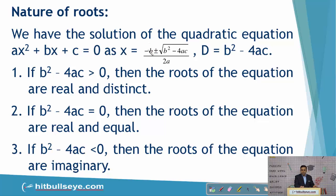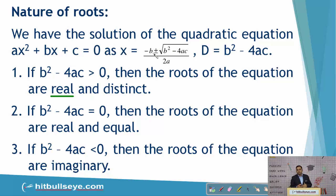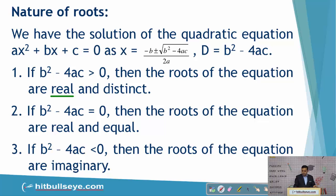−b is a real number, 2a is real, so on the whole the roots of the equation are real. Further, you are adding −b to the real number, then you are subtracting this real number from −b. That means once you are adding two numbers and then subtracting two numbers, the two results will be different. So the roots obtained here will be real as well as distinct.